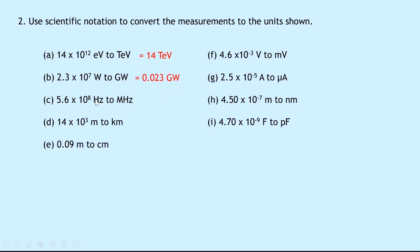Part C is 5.6 times 10 to the power of 8 hertz to megahertz. Mega is times 10 to the power of 6, so I'm going to move the decimal point two places to the right and get 560 megahertz. In part D we've got 14 times 10 to the 3 meters to kilometers. Kilo is times 10 to the 3, so this just becomes 14 kilometers. In part E we've got 0.09 meters to centimeters. Centi is times 10 to the minus 2, so this is the same as 9 centimeters.